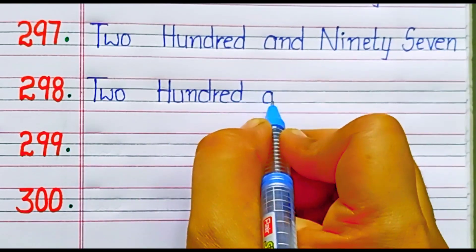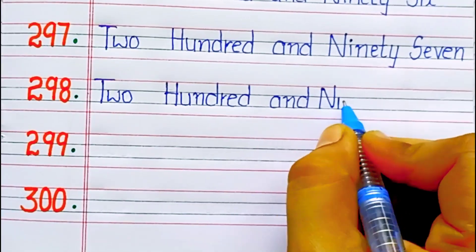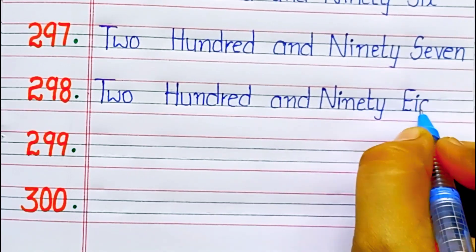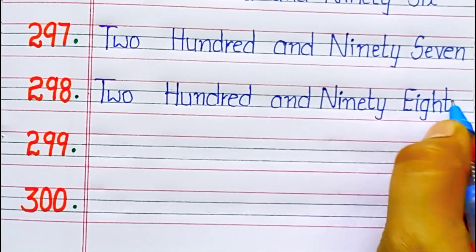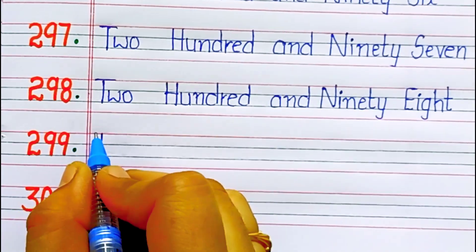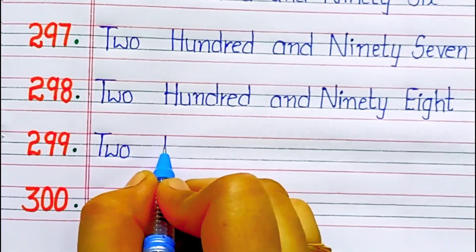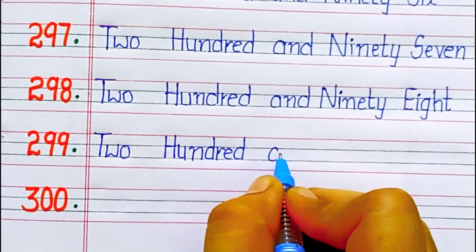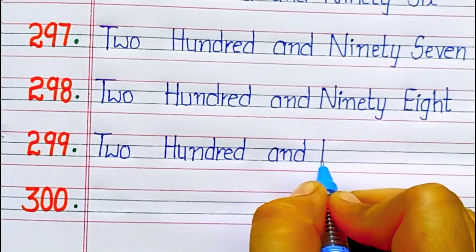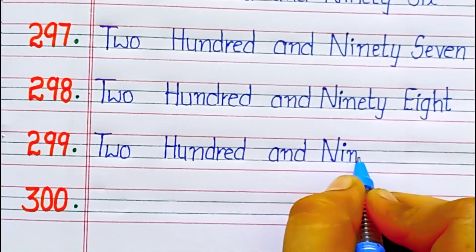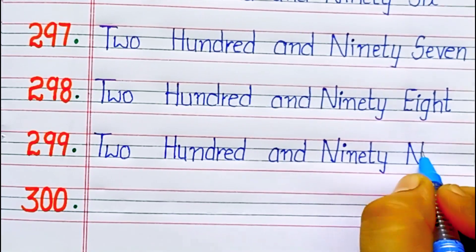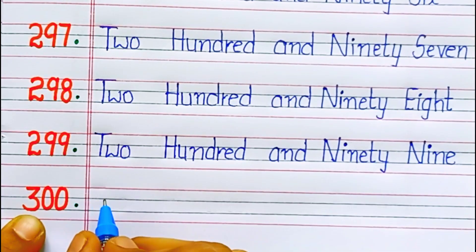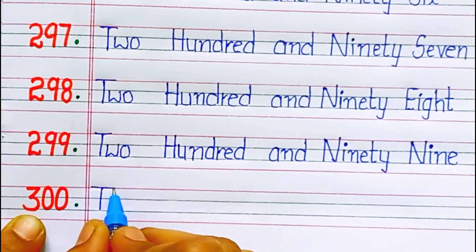297 — n-i-n-e-t-y 90, s-e-v-e-n 7, ninety-seven. 298 — n-i-n-e-t-y 90, e-i-g-h-t 8, ninety-eight. 299 — n-i-n-e-t-y 90, n-i-n-e 9, ninety-nine.